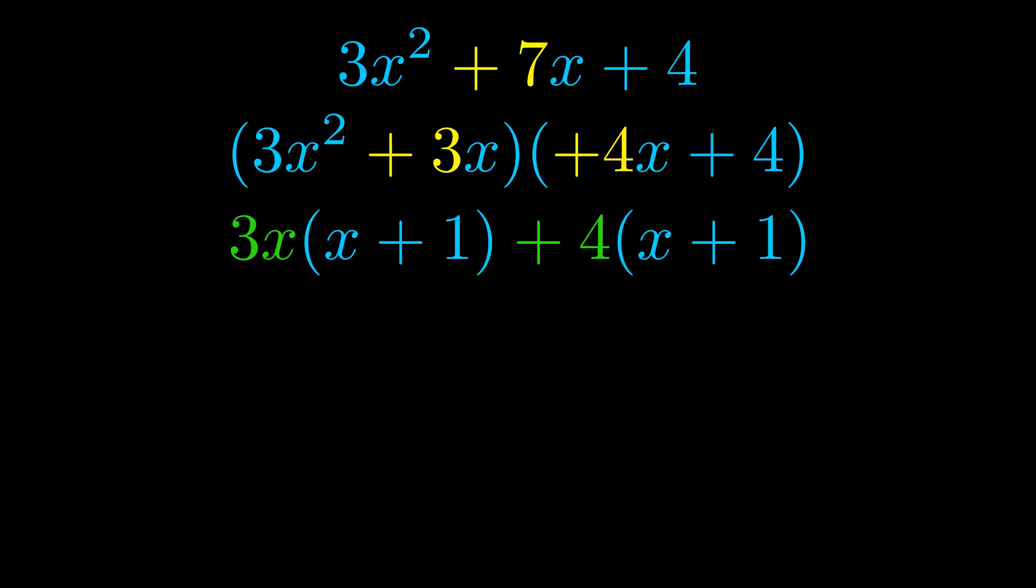Notice also how what remains inside of the parentheses is the same in both cases. The blue values are the same. Those blue values will become one of our factors and we will combine the two green values, the GCFs that we pulled out, to get the other one. And that is our fully factored equation.